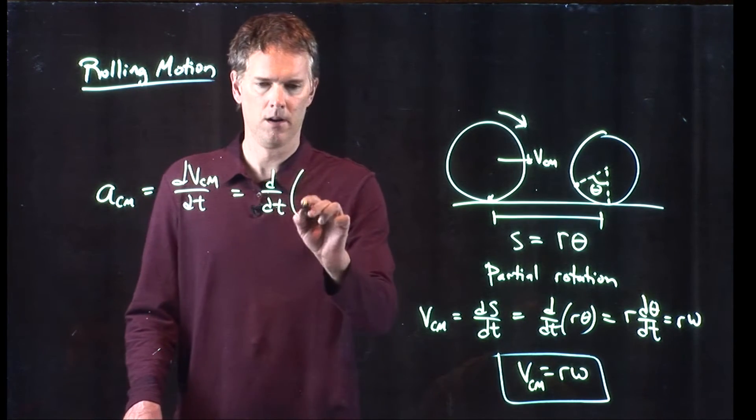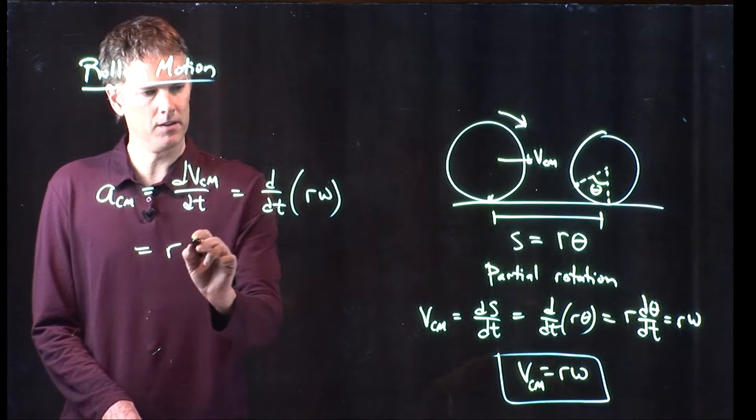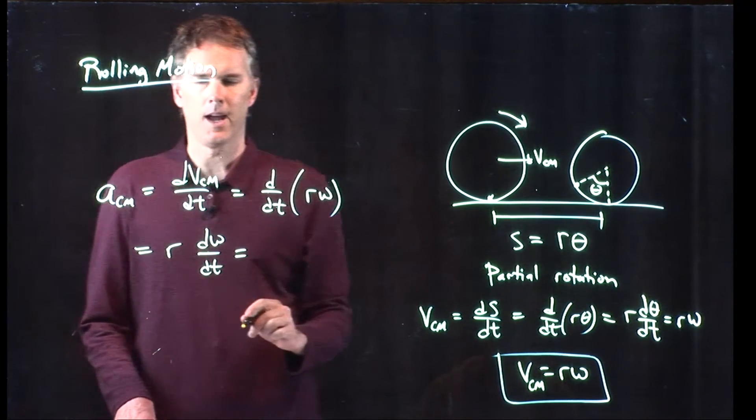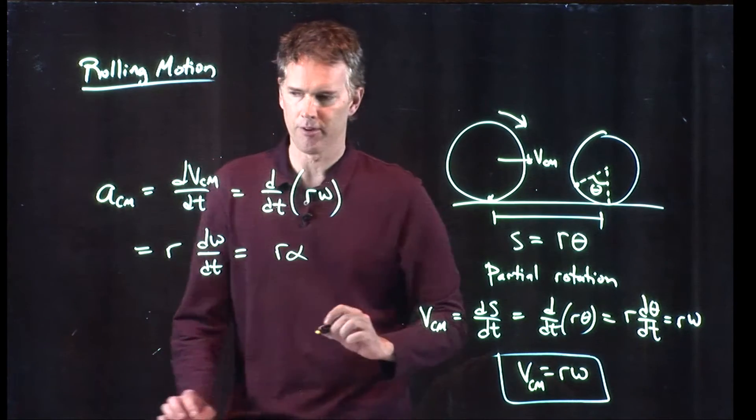But now we know what that is, it's right there, r times omega. Again, r is a constant, and so it comes out of the derivative. And we have r dω/dt, but we know exactly what that is. That is alpha.